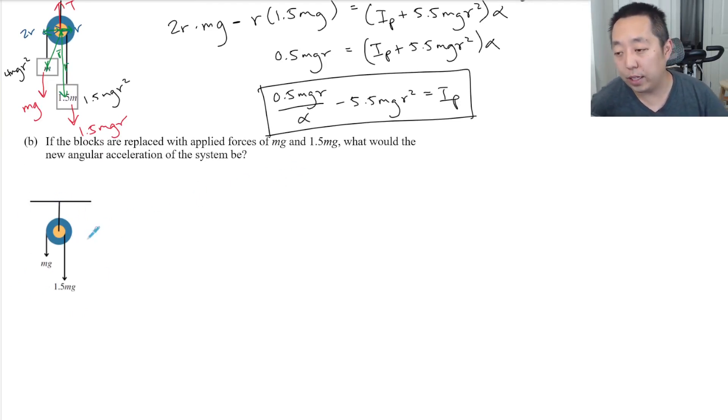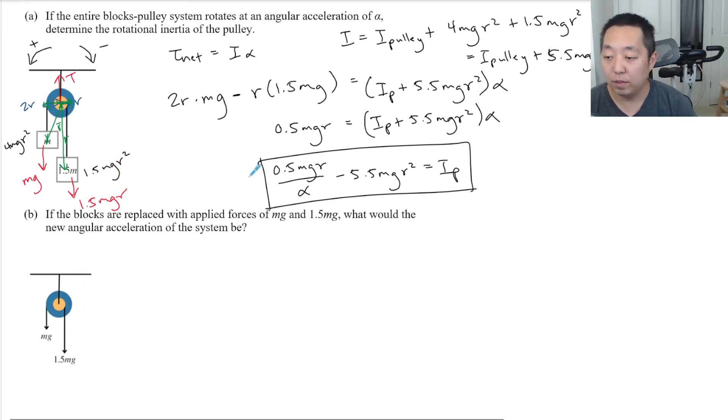So what has changed about it is the forces are all kind of the same. We have Mg and 1.5 Mg. So in terms of the free body diagram, nothing has changed. So when I do my net torque, the net torque is still 0.5 MgR.